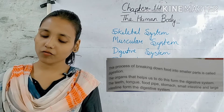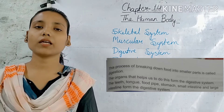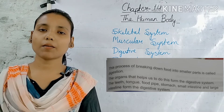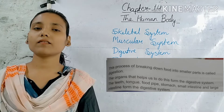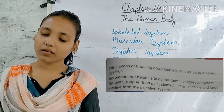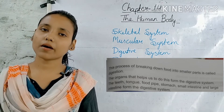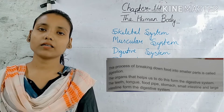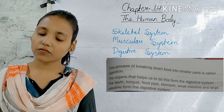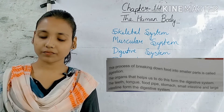The organs that help us to do this form the digestive system. अब bachcho, हमारे शरीर के वे अंग जो इस प्रक्रिया में भाग लेते हैं या इस क्रिया को करने में हमारी सहायता करते हैं, वे digestive system कहलाते हैं। The teeth, tongue, food pipe, stomach, small intestine and large intestine form the digestive system. हमारे शरीर के ये सभी अंग मिलकर digestive system का निर्माण करते हैं: teeth, tongue, food pipe, stomach, small intestine and large intestine. Clear everyone?